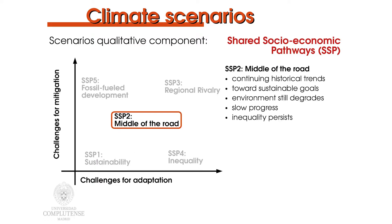SSP 2 is named middle of the road. Social, economic and technological trends do not shift markedly from historical patterns. Development and income growth progress unevenly among countries. Global and national institutions work towards sustainable goals but make slow progress. The environment degrades, though there are some improvements and the intensity of resource and energy use declines. Income inequality persists or improves only slowly. This scenario presents moderate challenges to mitigation and adaptation with a significant heterogeneity across and within countries.